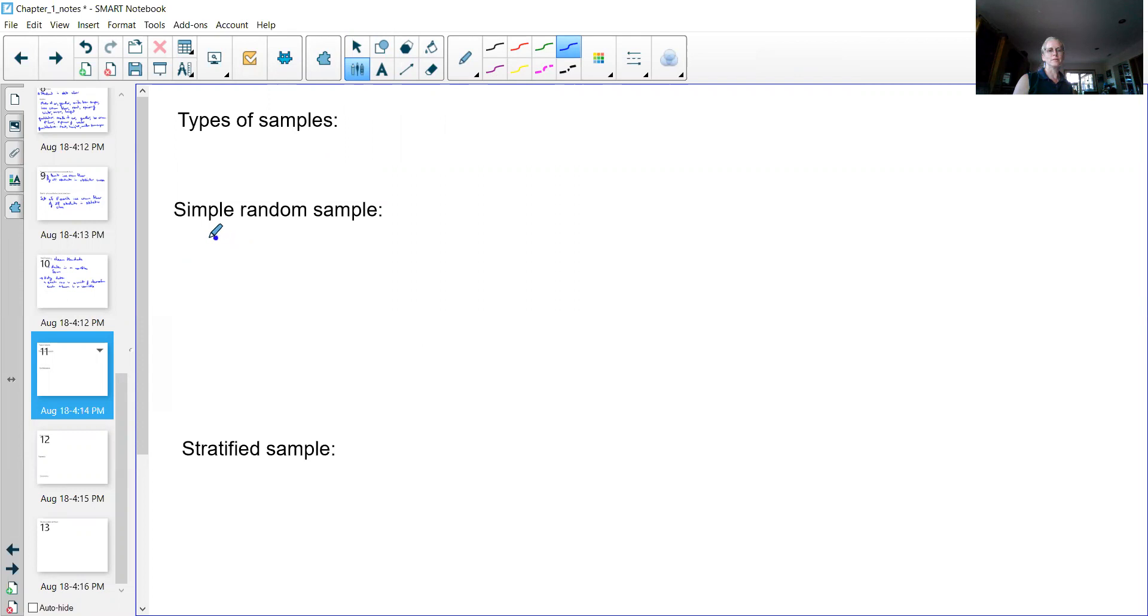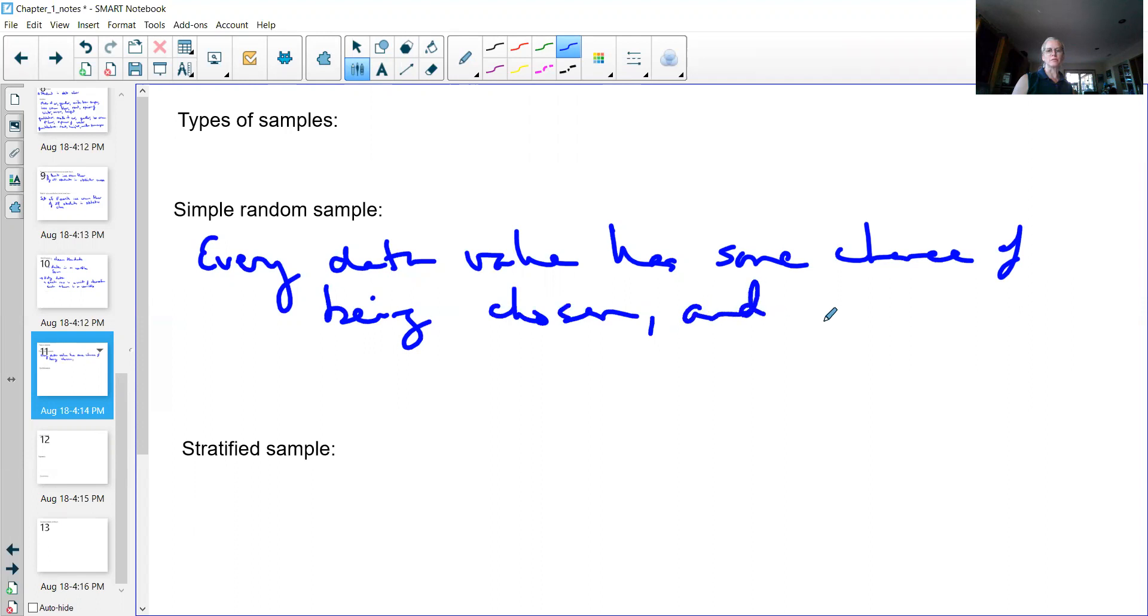This is where every data value has the same chance of being chosen, and every sample has the same chance of being chosen.